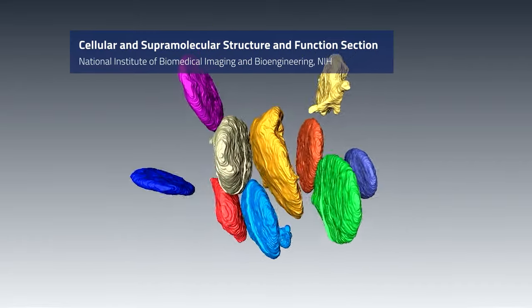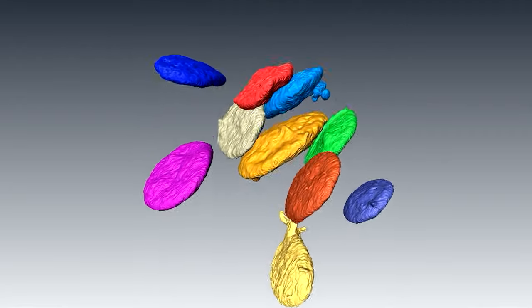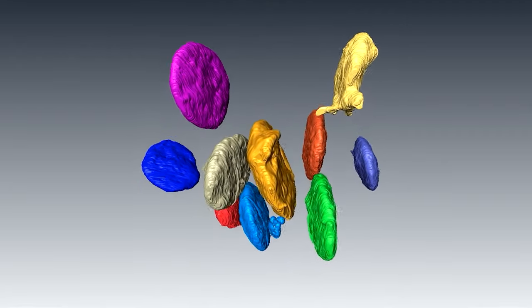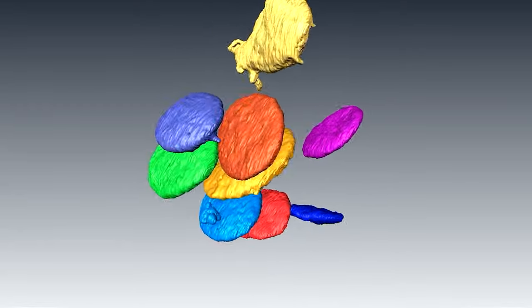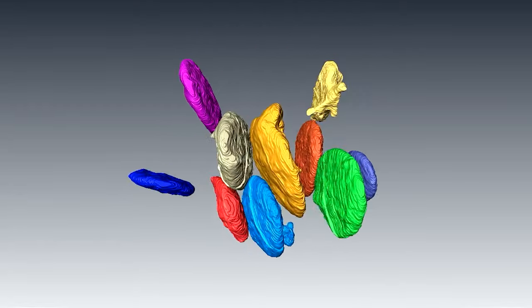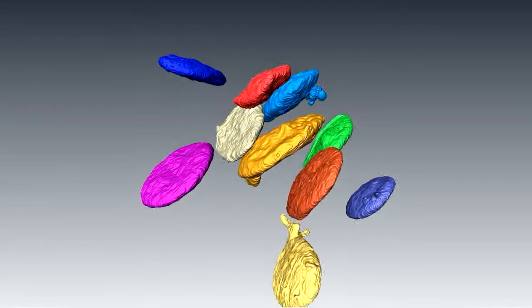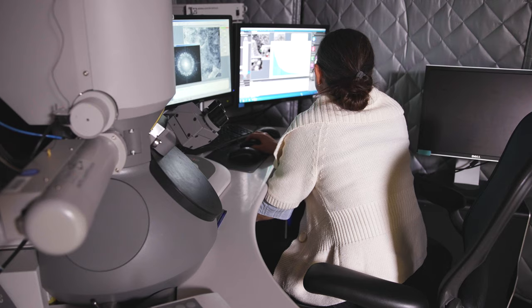When you look at cells in three dimensions as opposed to the two-dimensional images that traditionally people have obtained with electron microscopy, you start to discover new things. Every cell you look at has some new features, and I think that's what makes the techniques we work on quite exciting because you always have the ability to discover new things.